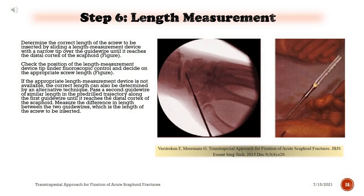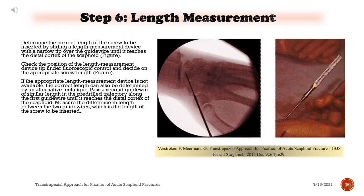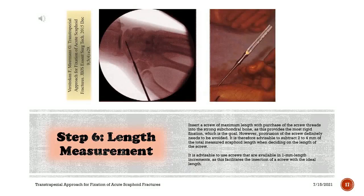Step 6: Length measurement. Determine the correct screw length by sliding a length measurement device with a narrow tip over the guide wire until it reaches the distal cortex of the scaphoid. Check its position under fluoroscopic control. If the appropriate device is not available, pass a second guide wire of similar length along the first until it reaches the distal cortex, then measure the difference in length between the two wires. Insert a screw of maximum length with purchase of the screw threads into the strong subchondral bone, as this provides the most rigid fixation.